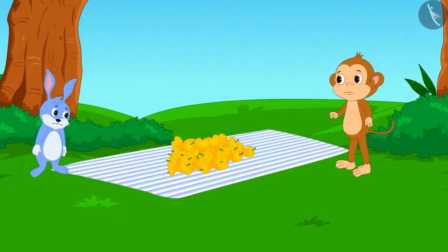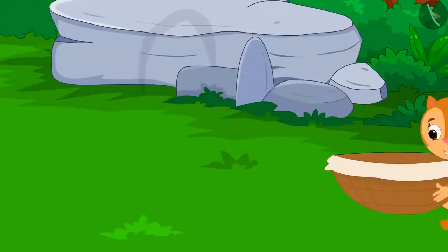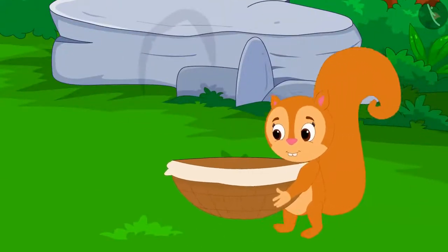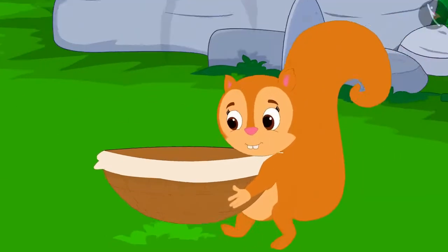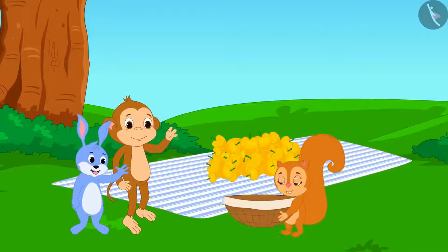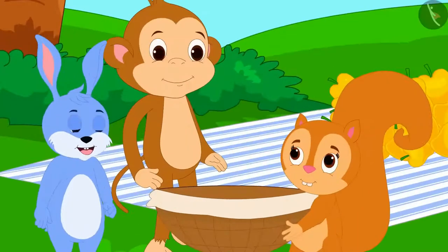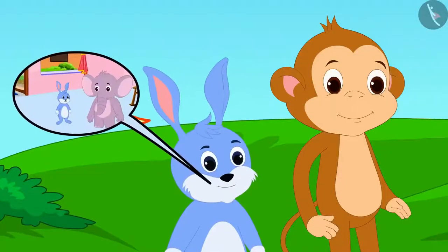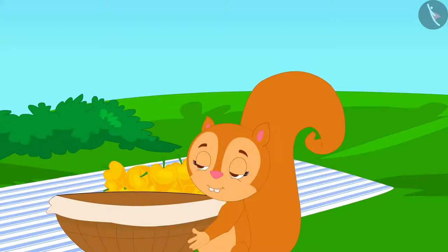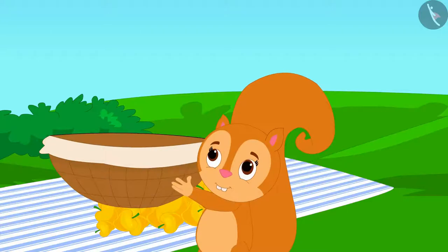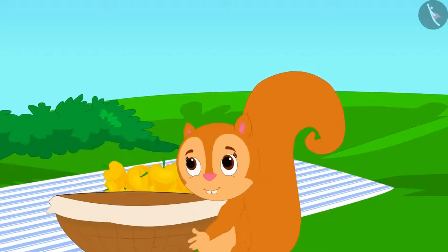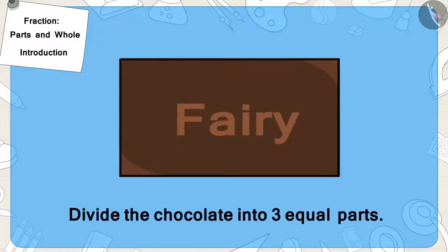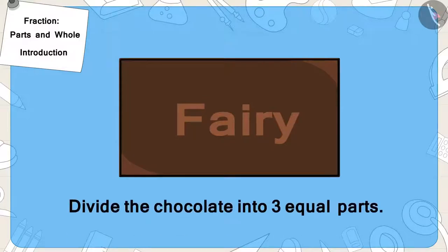Look, Chanda is passing by. She also has an empty basket. Babban and Bunny asked for her basket and told her the entire story. Chanda told them she could give them her basket, but she wanted an equal share of the chocolate. So now they have to divide the chocolate into three equal parts.